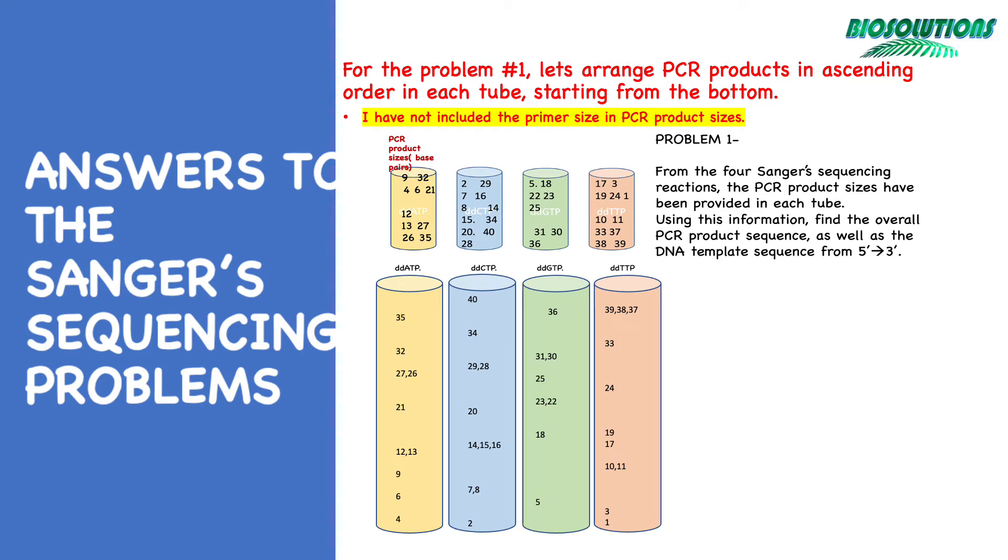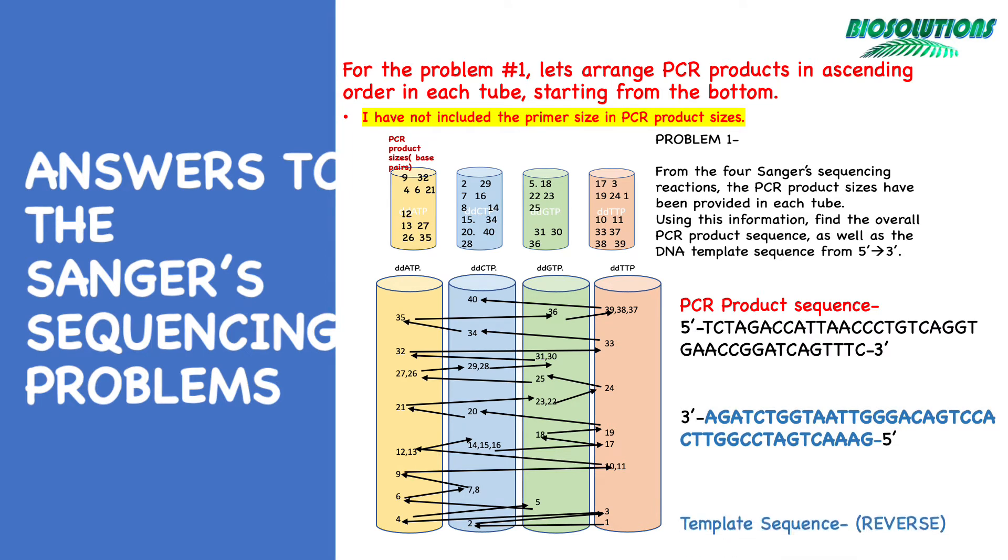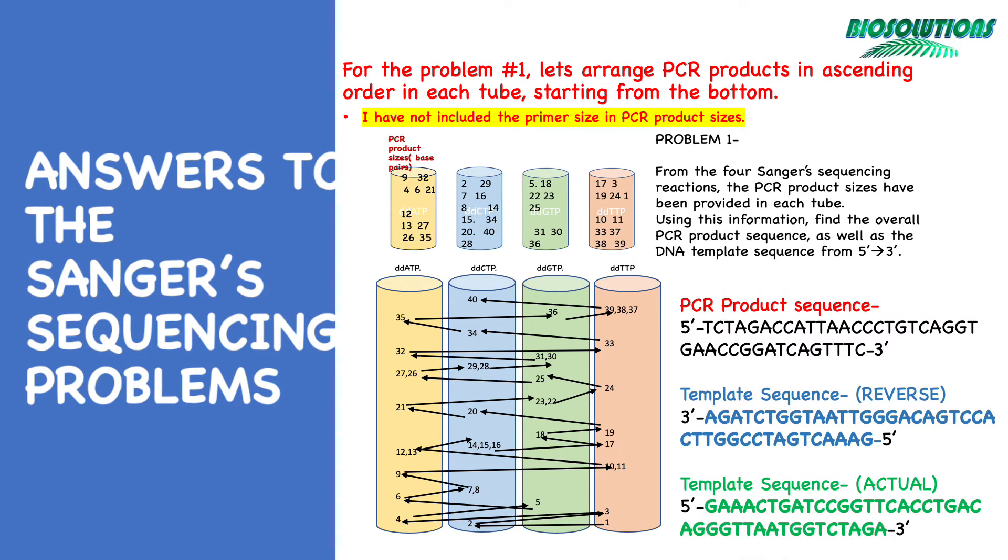Remember, usually we do not include primer size in PCR products. So we start reading these PCR products from bottom to the top going across all the folder lanes, which gives us the PCR sequence. Then we make a complementary sequence to it, which is a template sequence, but it is still 3' to 5', so we have to reverse it to get the actual template sequence.